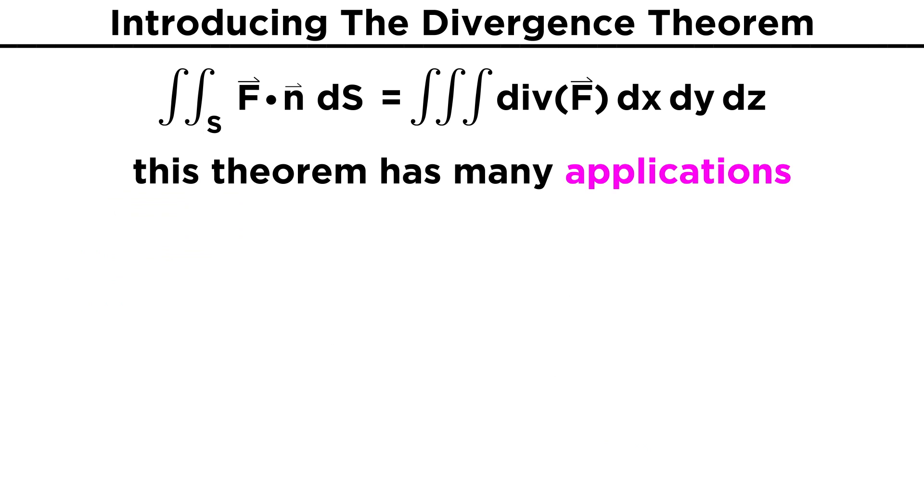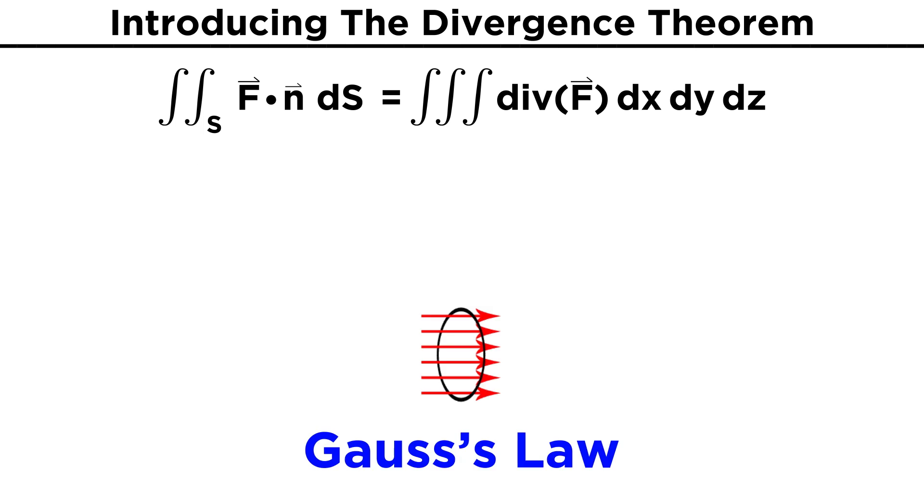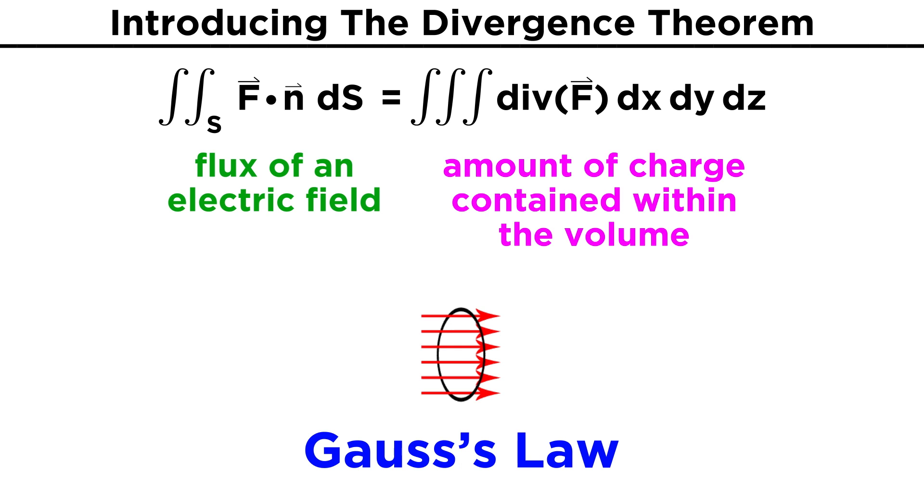The divergence theorem is another useful tool for calculations, and it has a variety of applications. In fact, the theorem is used in Gauss's law to relate the flux of an electric field, which would be the surface integral part of the theorem, to the amount of charge contained within the volume, which would be the triple integral part of the theorem.